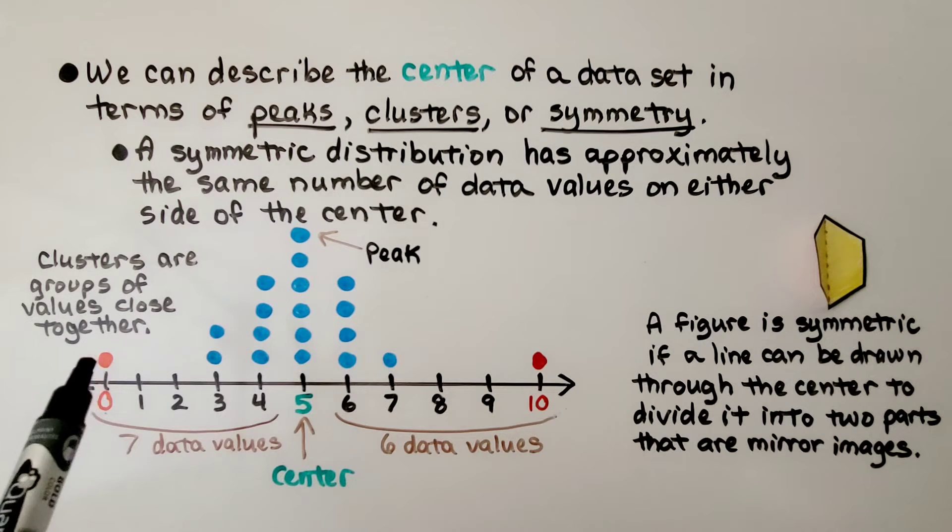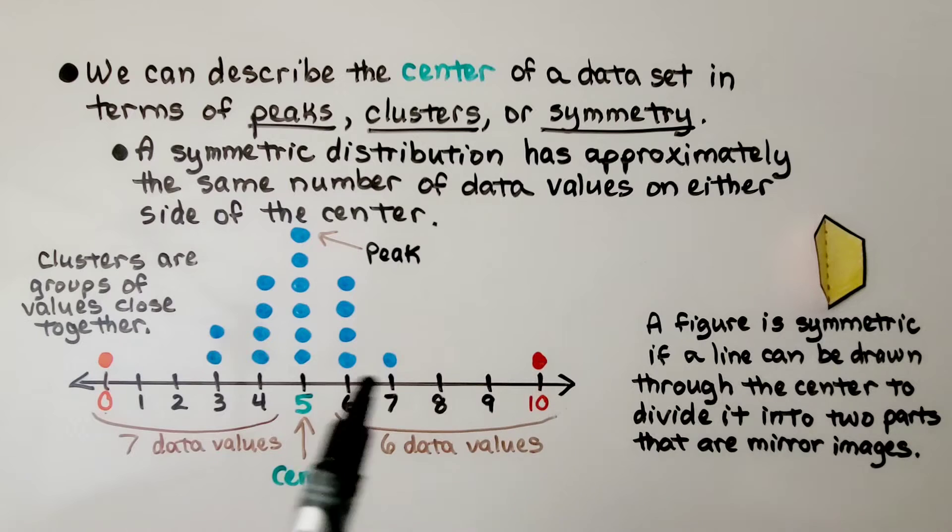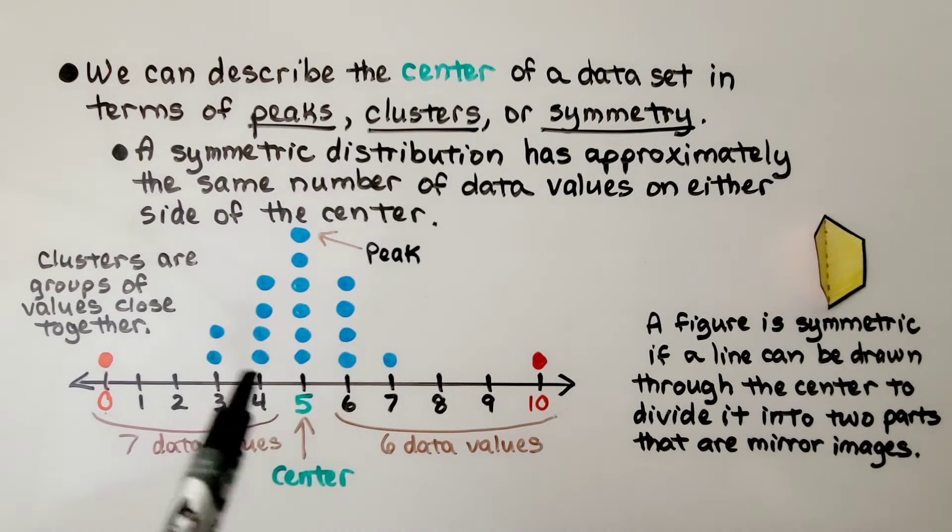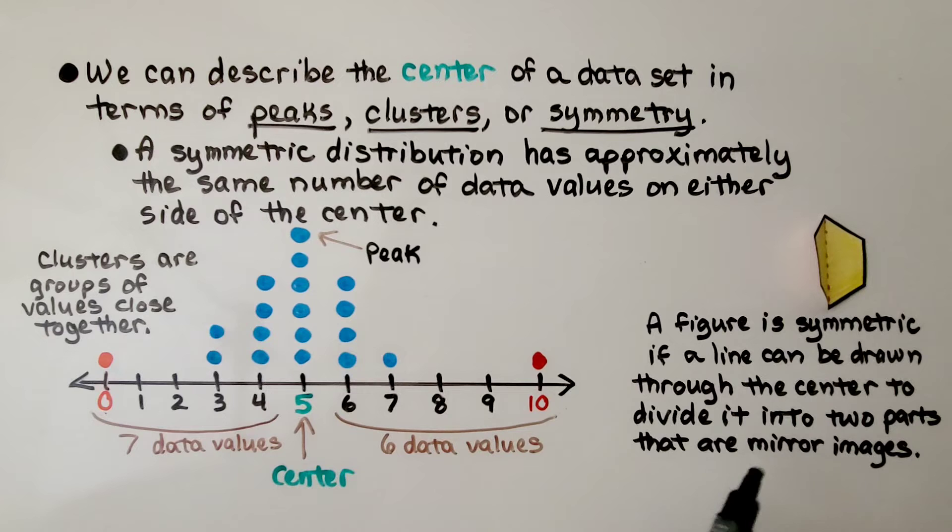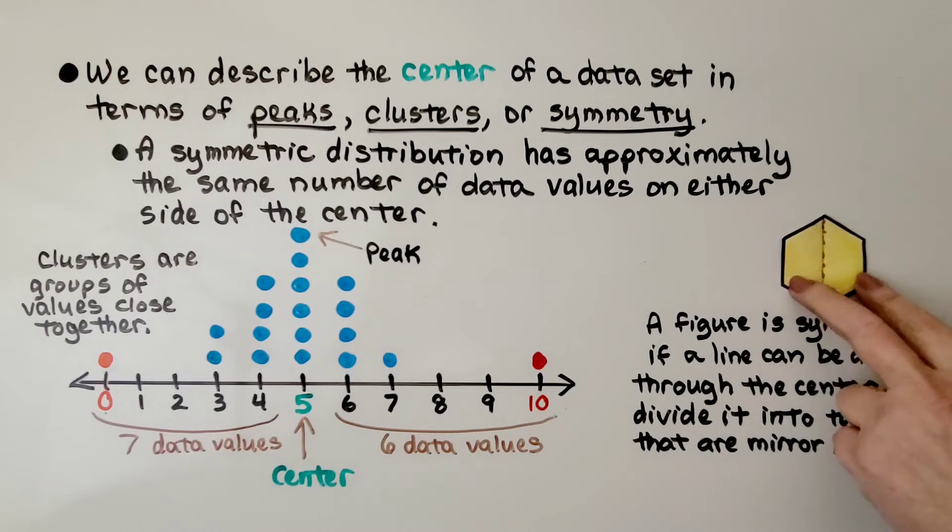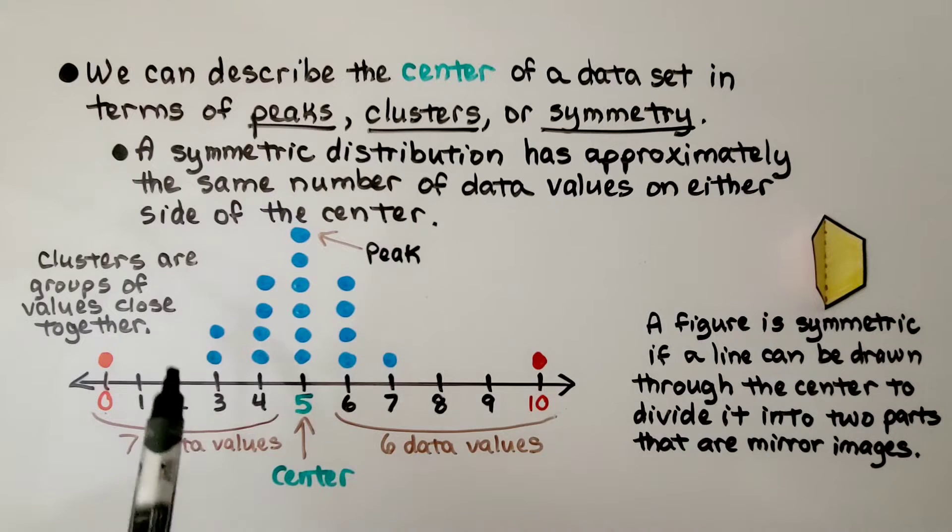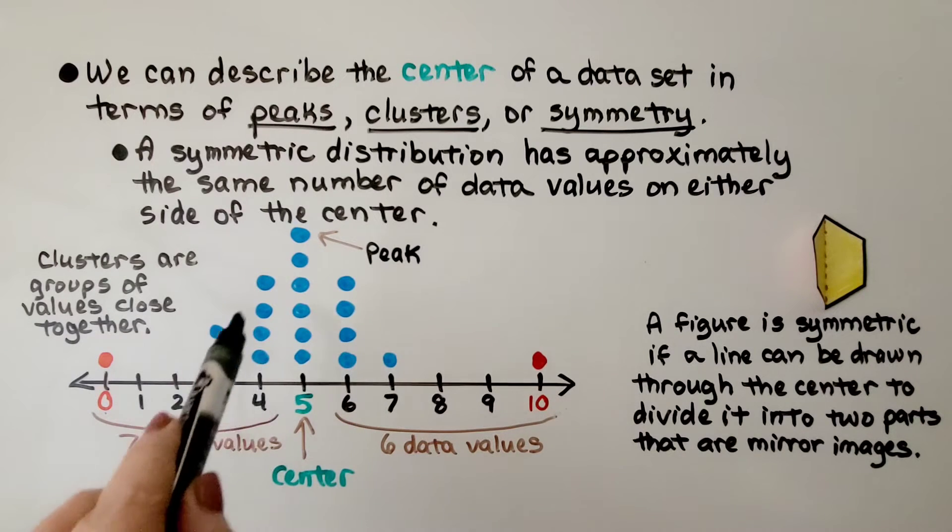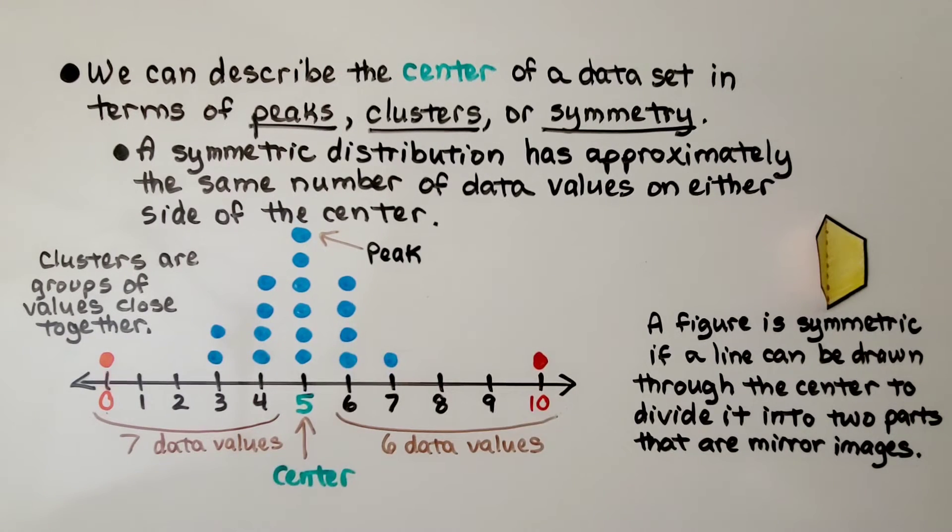We can see there is an outlier over here and there is an outlier over here, and this is symmetrical because a figure is symmetric if a line can be drawn down through the center, like in this hexagon, and it divides it into two parts that are mirror images. If we fold it over, it is the same. So our data values are symmetric. We have got about the same number over here that we do over here. This side has 7 and this side has 6.